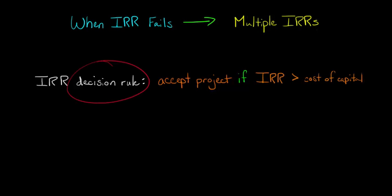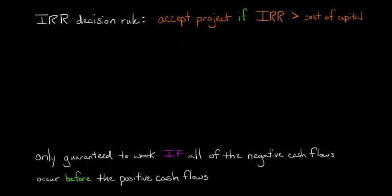The decision rule with IRR is that you're only going to accept the project if the IRR exceeds the cost of capital. By cost of capital, I'm talking about the opportunity cost of capital. So IRR is only guaranteed to work if all of the negative cash flows come before they occur before the positive cash flows.